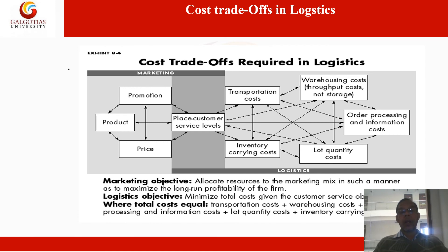There is a different cost trade-off required in logistics. The marketing department is concerned with the promotion of the product at a particular price, whereas fiscal distribution is concerned with total cost reduction. The total cost components are transportation cost, warehousing cost, inventory carrying cost, packaging cost, material handling cost, order processing cost, etc. The total cost needs to be minimized so that the total product cost is less. This is cost trade-off in logistics.